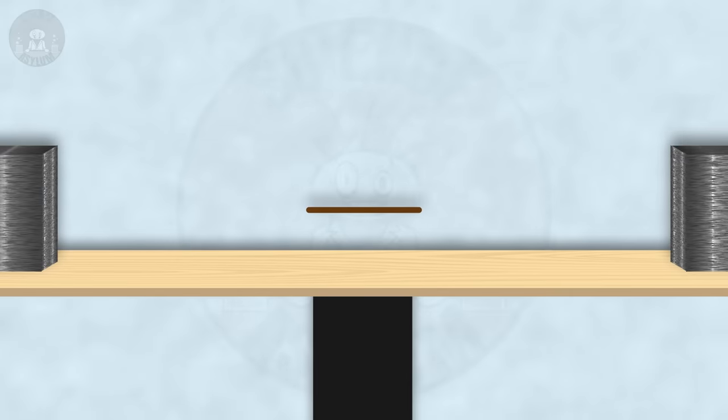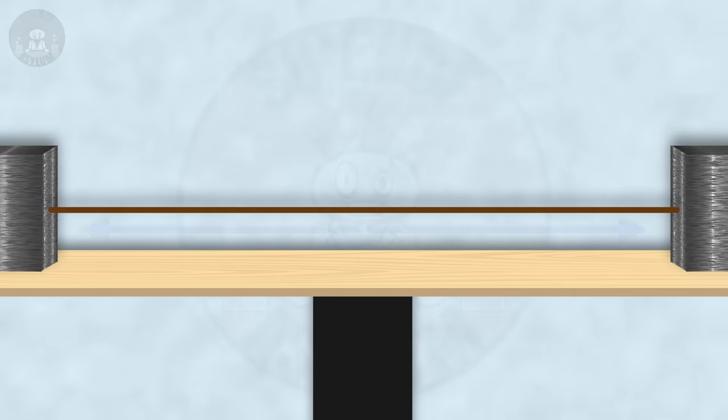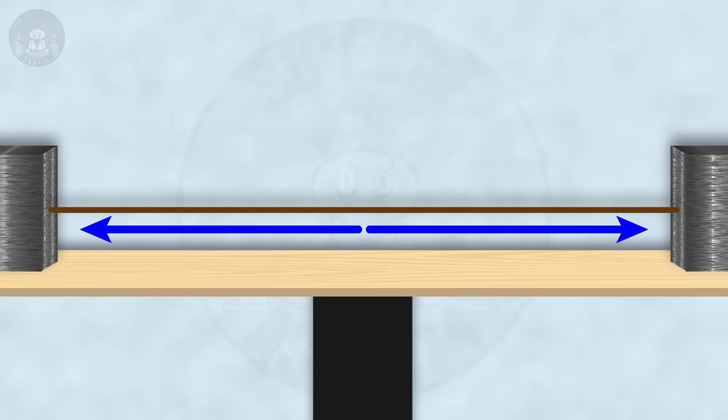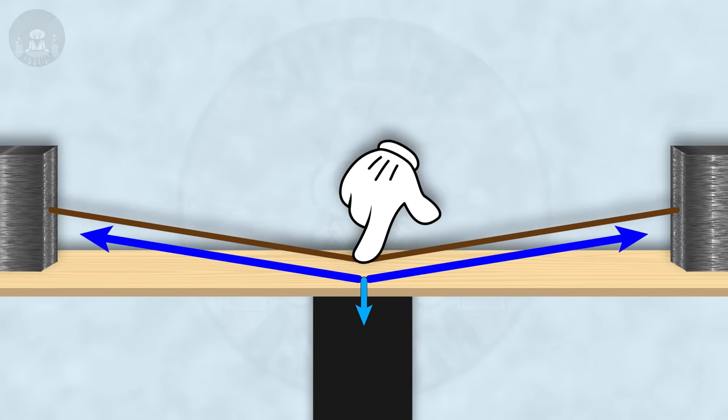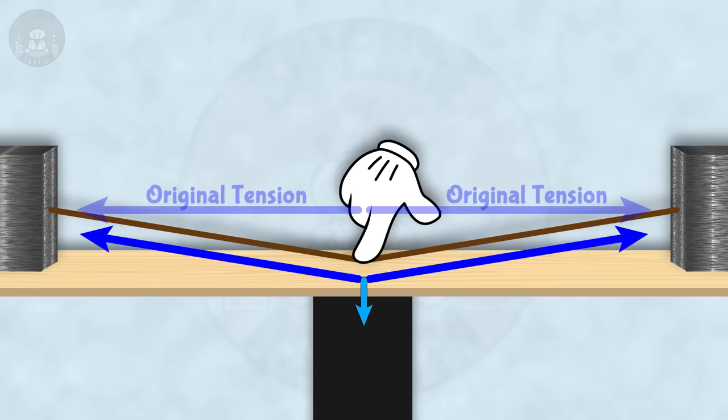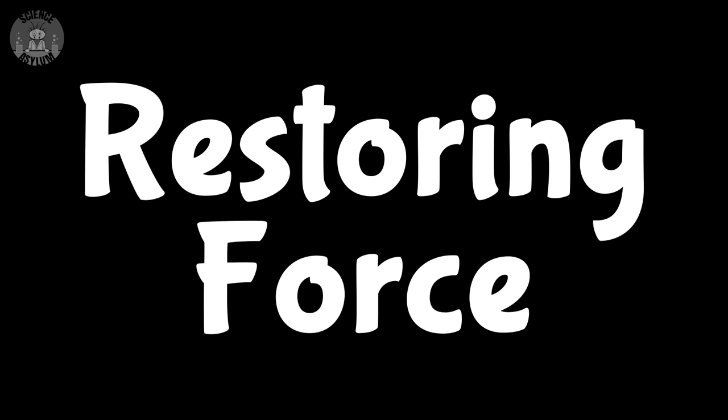Before we get into the abstractness of quantum mechanics, let's look at something a little more tangible. Consider a one-dimensional string like this. There's some tension in the string all along its length. It's not perfectly rigid — it can stretch if we push it up or down. Naturally, this would increase the tension ever so slightly. That little bit of extra tension is something very special. It's called a restoring force.